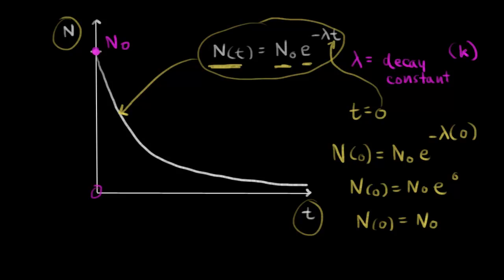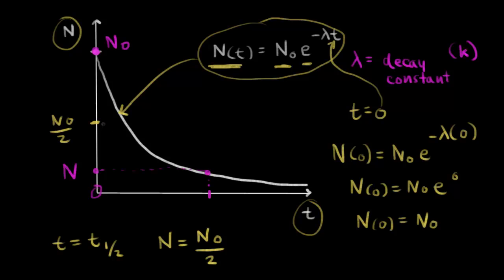You could do this for any time t — just pick a time, go up to the curve, and find the corresponding value on the graph. Let's do it for half-life. When time equals one half-life, the number of radioactive nuclei is the initial divided by two — half of it remains. If we take N-naught, divide by two, go over to the curve, and drop down to the time axis, that time represents our half-life. That's what it looks like graphically.